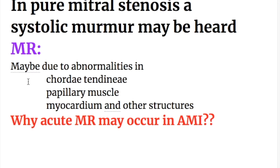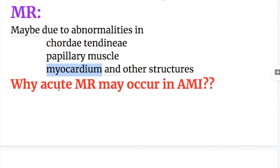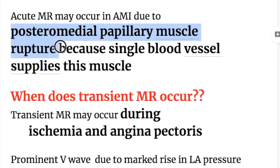Why does mitral regurgitation occur? Mitral regurgitation may be due to abnormalities in chordae tendineae, papillary muscles, myocardium, and other structures. Mitral regurgitation also occurs in acute myocardial infarction. Acute mitral regurgitation may occur in acute myocardial infarction due to posteromedial papillary muscle rupture.